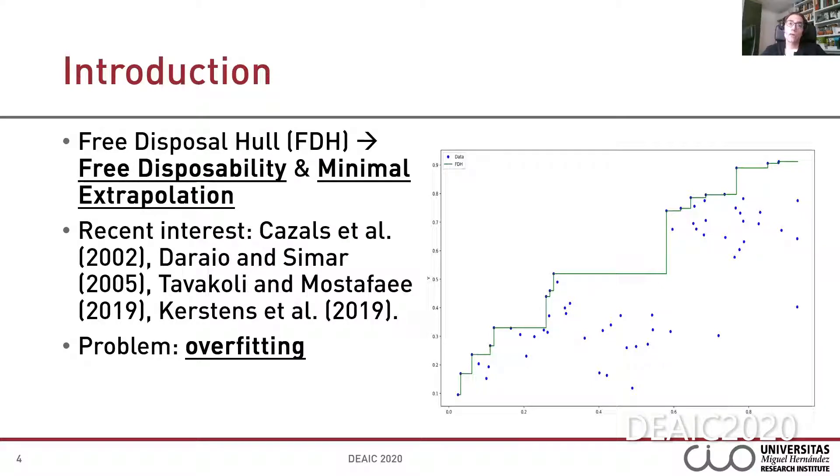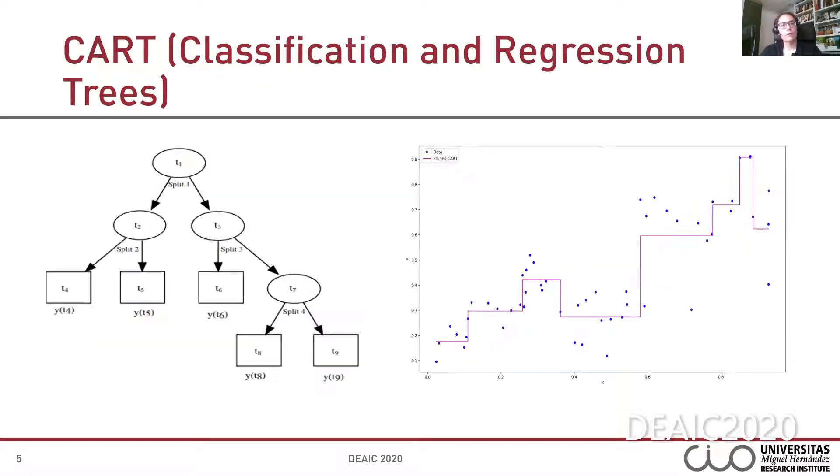However, by construction, the FDH technique suffers overfitting. Note in the figure that the estimated frontier by the FDH fits like a glove to a data sample, satisfying additionally free disposability, monotonicity in this case. Overfitting is a consequence of the assumption of minimal extrapolation in this case.